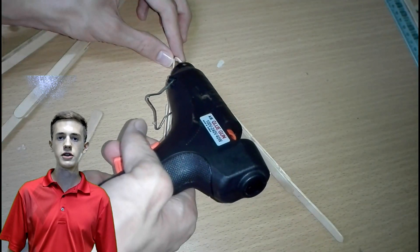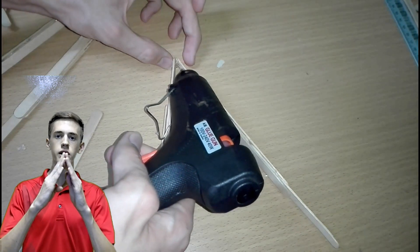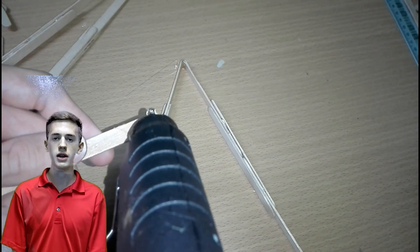After that you're going to use the last four sets of popsicle sticks to make two 40 degree triangles by gluing them together.